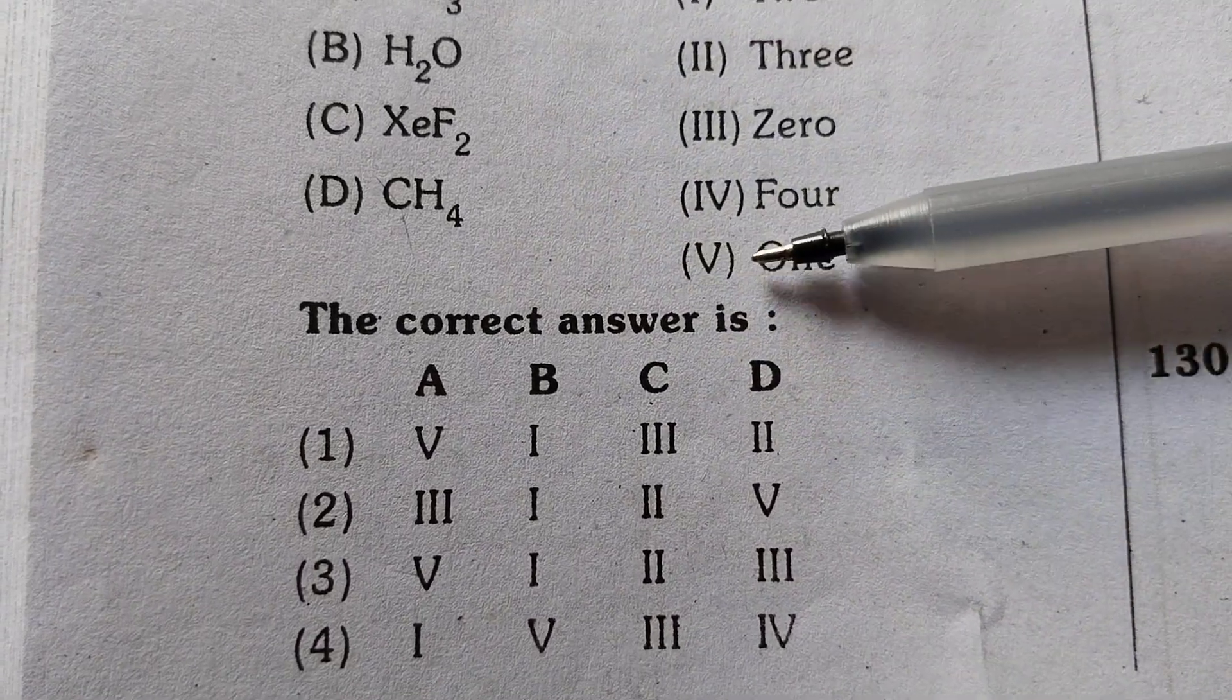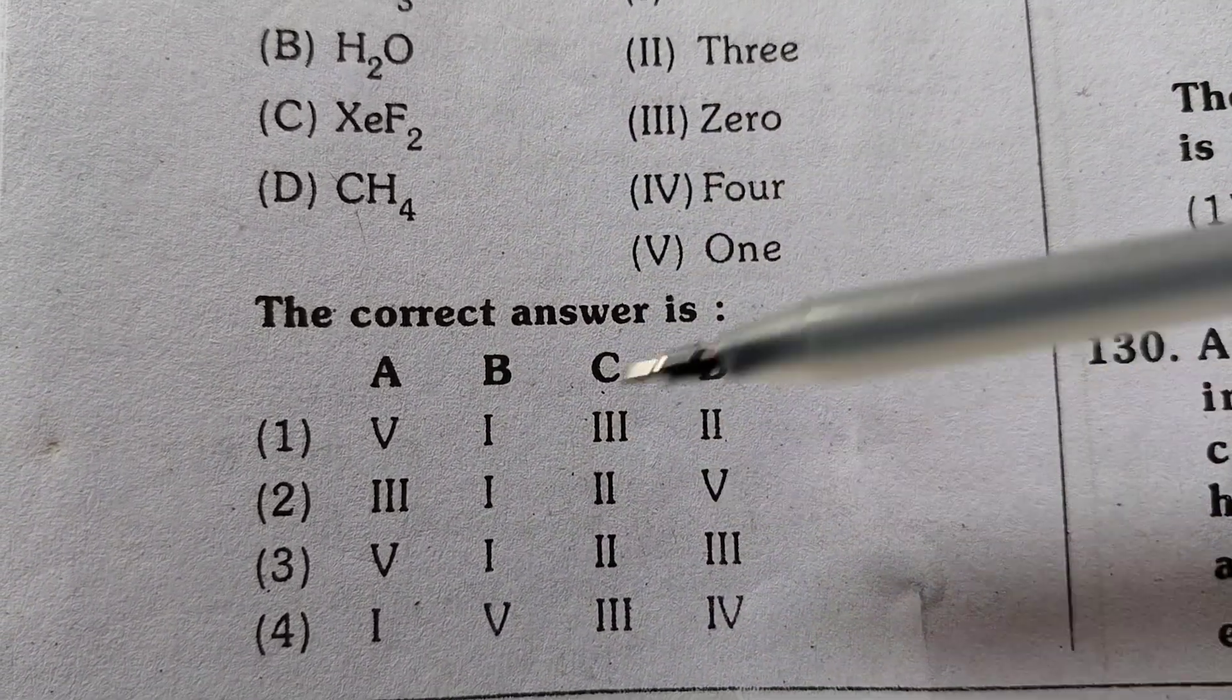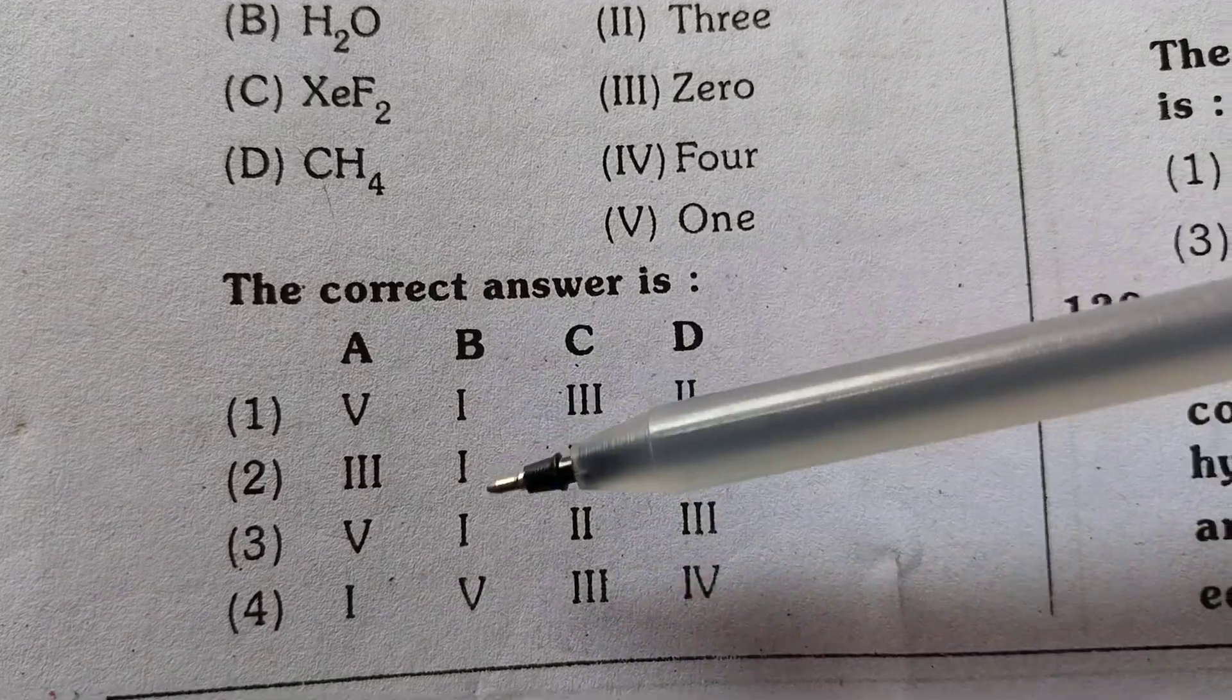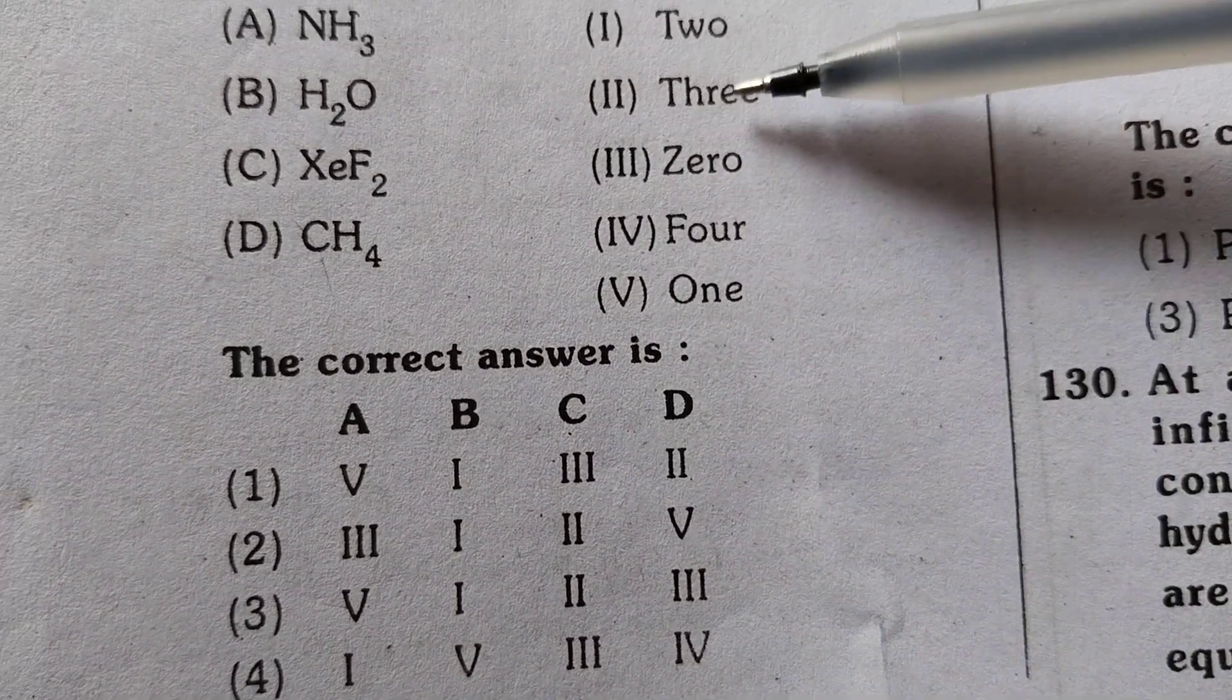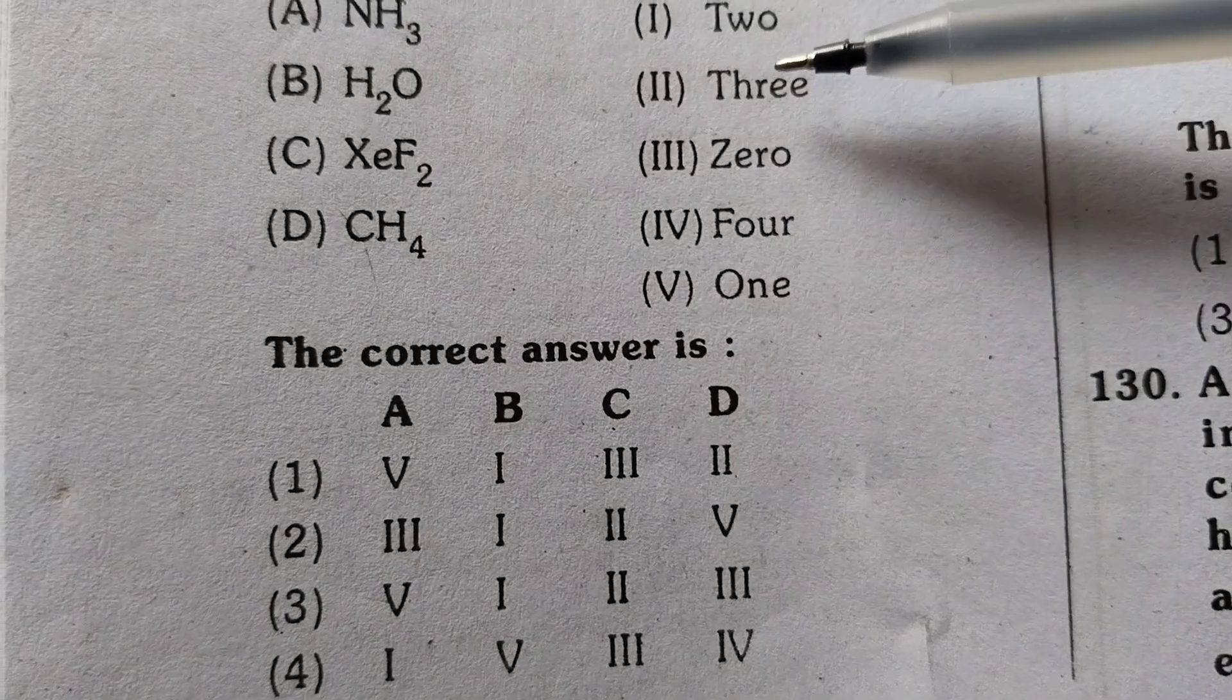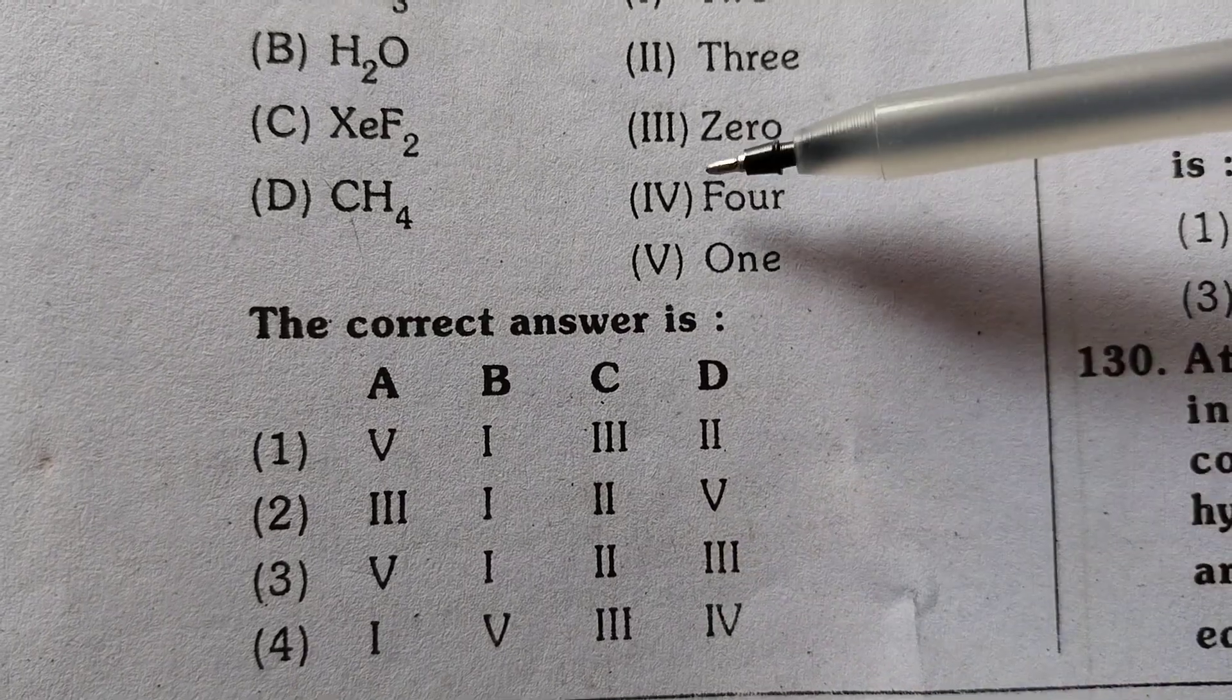So, ammonia is one, H2O is two. A is V, C is III. XeF2 is three, C is II. D is III, matching CH4 to zero lone pairs.